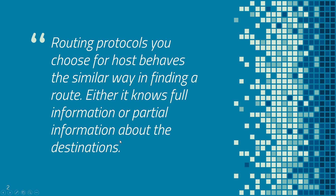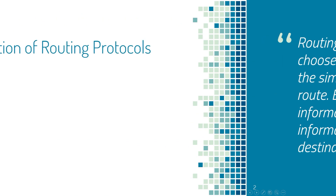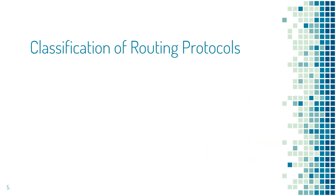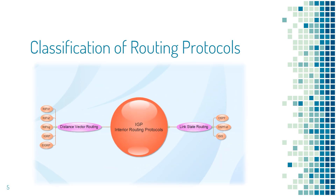Routing protocols behave the similar way in finding a route — either knowing full information or partial information about the destinations. Both options have their own pros and cons, which we will cover in the upcoming sections. The routing protocols can be broadly classified into two: IGP and EGP. IGP stands for Interior Gateway Protocol and EGP stands for Exterior Gateway Protocol. An example of EGP is BGP, which is the routing protocol of the internet. IGP is commonly used within enterprise, data center, or service provider environments.